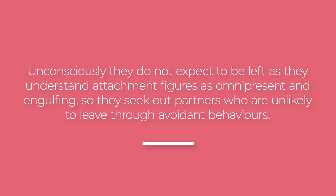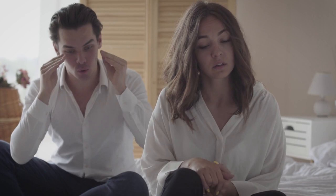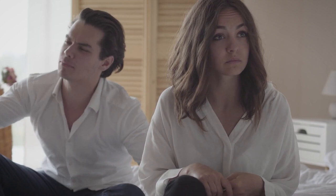I found a paragraph from the expert attachment website free2attach.com that really sums up the avoidant's plight. Unconsciously, they do not expect to be left, as they understand attachment figures as omnipresent and engulfing. So they seek out partners who are unlikely to leave through avoidant behaviors. Weirdly, an avoidant is searching for someone they can exert some type of control over — someone they know is unlikely to leave. Often you'll find an avoidant threatening to leave the anxious person as a way of exerting control and keeping them at a distance.